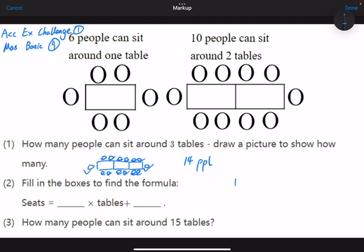So when we have one table, we will need six seats. When we have two tables, we'll need ten seats. And when we have three tables, we'll need fourteen seats. So this is asking us to find the general formula.